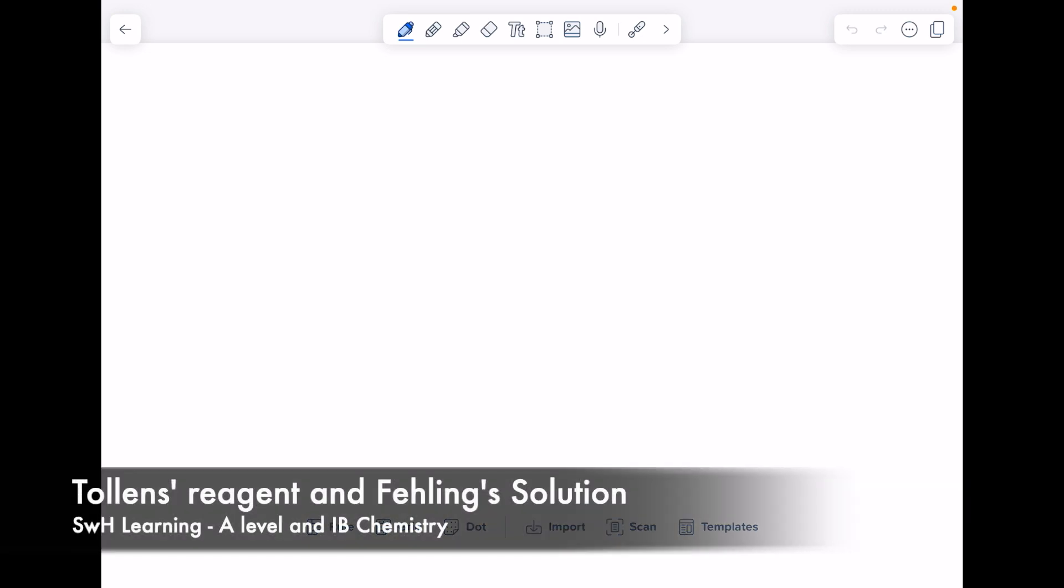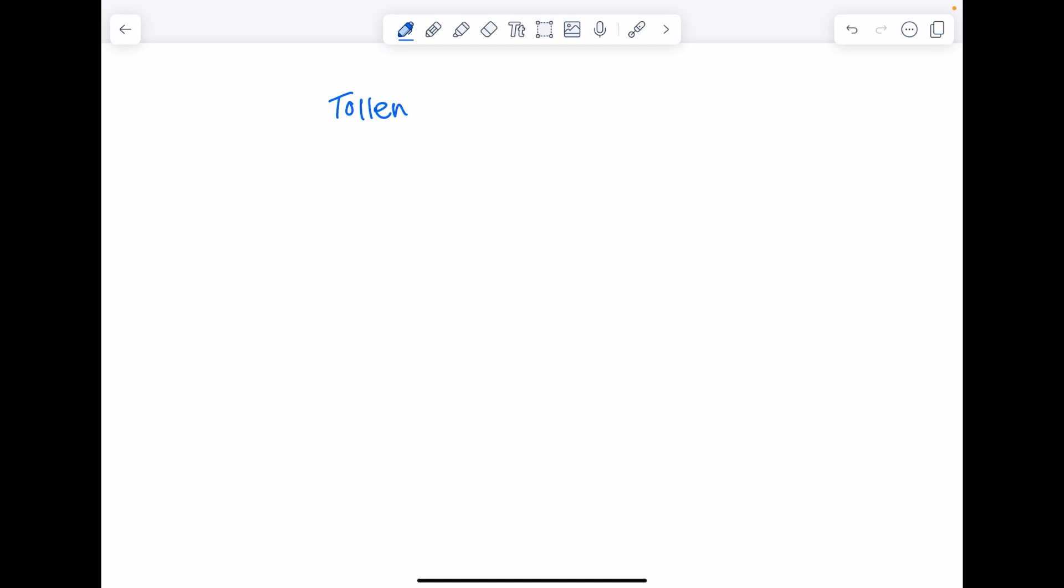This video is largely going to be about using Tollins reagent and Fehling's solution to distinguish between aldehydes and ketones. I just wanted to start with a brief summary of aldehydes, ketones, and carboxylic acids.